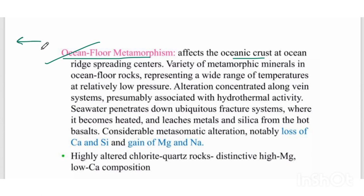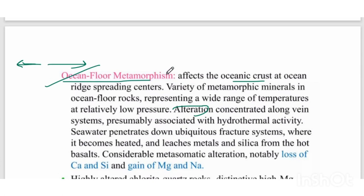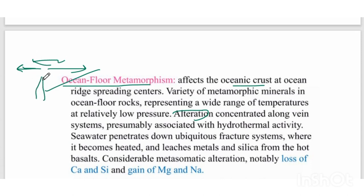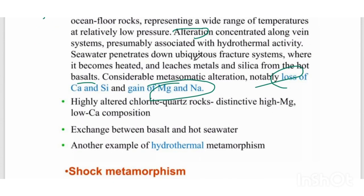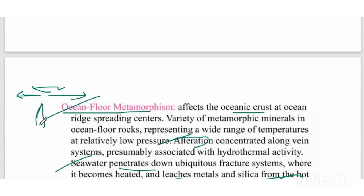Ocean floor metamorphism affects the oceanic crust at mid-ocean ridges. When two oceanic plates spread apart, water penetrates down through the fracture system, becomes heated, and leaches metals and silica from the hot basalt. There is loss of calcium and silica and gain of magnesium and sodium. This alteration is another example of hydrothermal metamorphism.